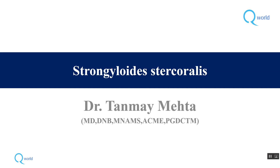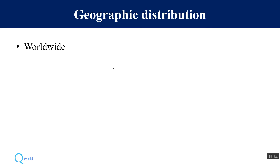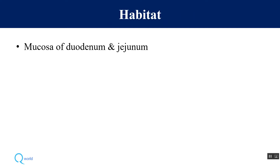Let us learn about another nematode which remains in the intestine — Strongyloides stercoralis. This worm is found worldwide, so its geographical distribution is worldwide. Its habitat is the small intestine, especially the duodenum and jejunum mucosa.